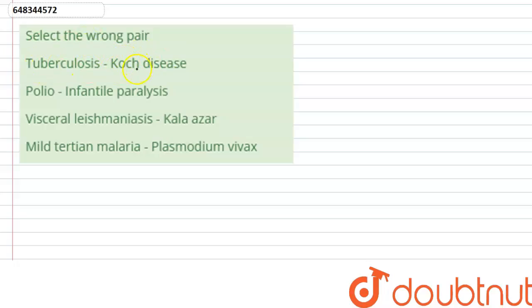The first pair is tuberculosis matched with Koch disease which is correctly matched. A scientist named Robert Koch proved the tuberculosis, that is TB, which is caused by the Mycobacterium.